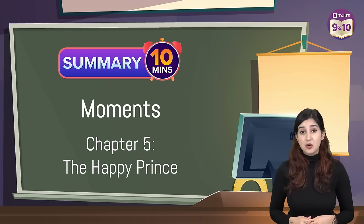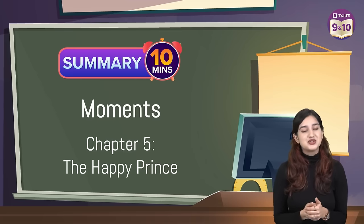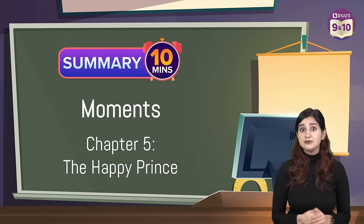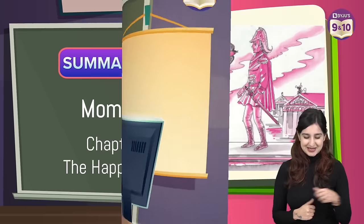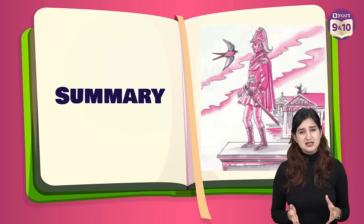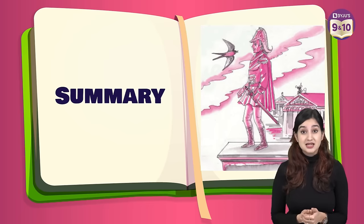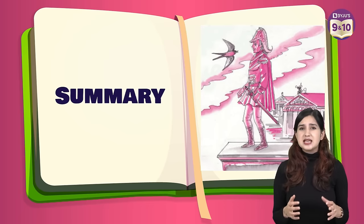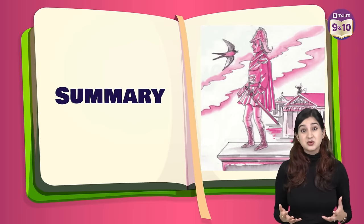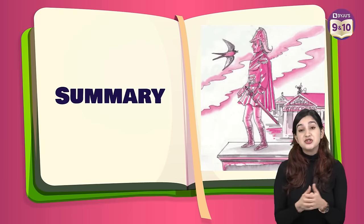That brings us to the end of the summary. Today we will be going over Chapter 5 from Moments, which is The Happy Prince. The Happy Prince is a beautiful story written by Oscar Wilde. It is the tale of a sculpture of the happy prince that was covered with gold leaves and precious gems. The statue was placed at a height such that it overlooked the city from the top.